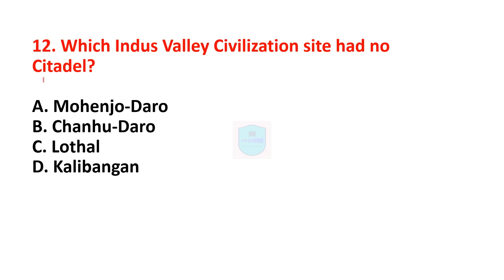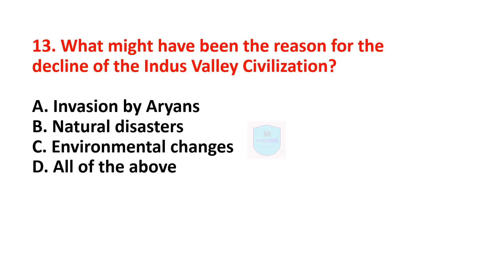Next question: which Indus Valley Civilization site had no citadel? Correct answer is Chanhudaro. In Chanhudaro there was no citadel. Next question: what might have been the reason for the decline of the Indus Valley Civilization? Correct answer is option D — all of the above — including invasion of the Aryans and natural disasters and environmental changes. These might have been the reasons for the decline of the Indus Valley Civilization.